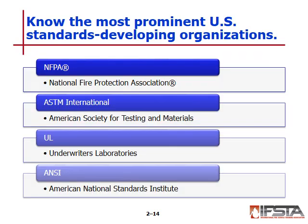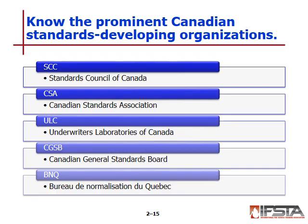The most prominent standards organizations in the U.S. include the National Fire Protection Association (NFPA), ASTM International (originally the American Society for Testing and Materials), Underwriters Laboratories (UL), and the American National Standards Institute (ANSI). In Canada, each province adopts approved standards independently from the Canadian federal government. Approvals are given by the Standards Council of Canada (SCC) and ANSI, which facilitates standards development through the consensus process.